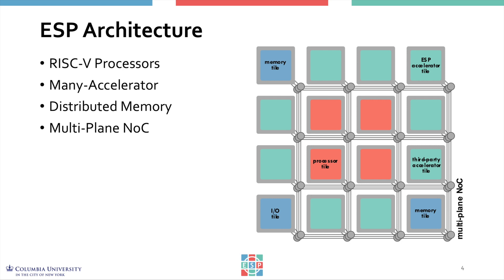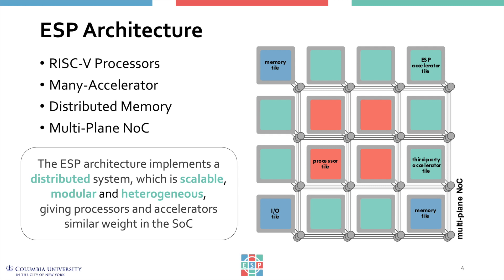The ESP architecture is tile-based. For a given application domain, the architect decides the structure of the system-on-chip by determining the number and mix of tiles. For example, this picture shows 16 tiles organized in a 4x4 matrix. A tile may contain a RISC-V processor, an accelerator, or a memory. Tiles are connected with a multi-plane network-on-chip. The ESP architecture implements a distributed system that is inherently scalable, modular, and heterogeneous. Processors and accelerators are given the same importance, and this system-centric view distinguishes ESP from other open-source RISC-V platforms.